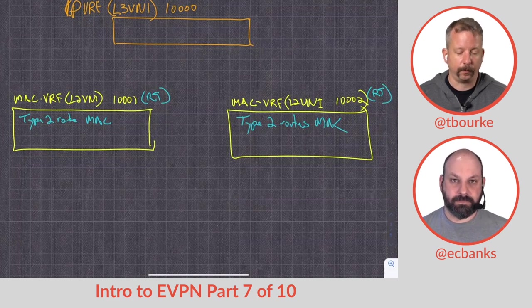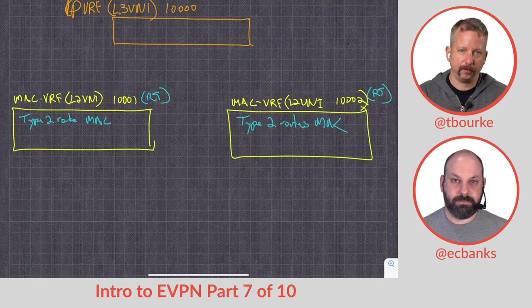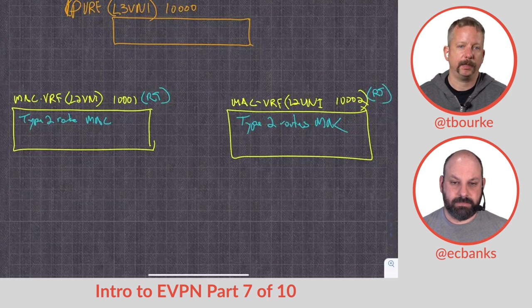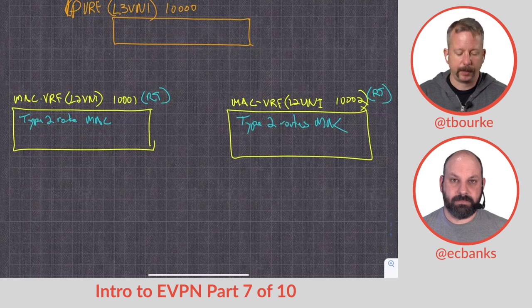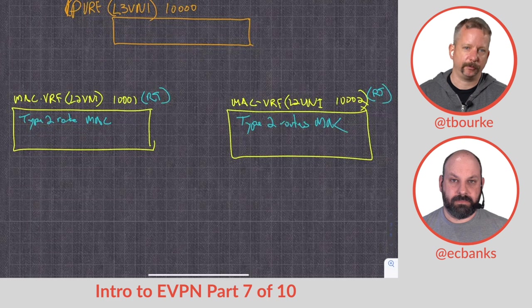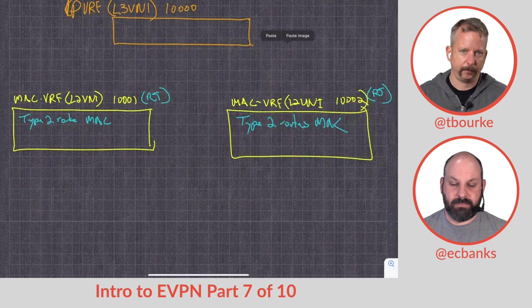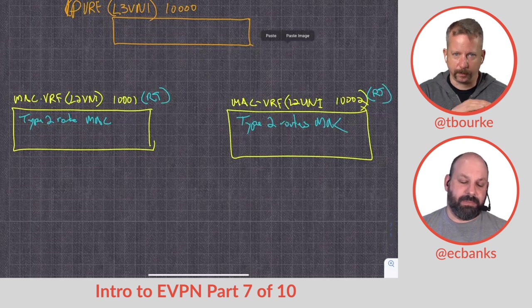And now I want to route between them. What I'm showing you is something called symmetric IRB. If you do asymmetric IRB, you don't need that IP VRF, but almost everyone does symmetric IRB. The symmetric part is that we have every leaf in our topology must have this IP VRF. So that's symmetric across all our devices.